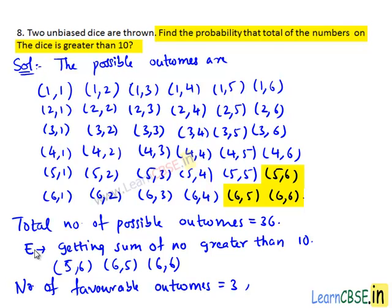Then we have number of favorable outcomes equals to 3, which are (5,6), (6,5) and (6,6). Then probability of event E, P(E), equals to number of favorable outcomes that is 3 divided by total number of possible outcomes which is 36. Here 3 is a common factor of both 3 and 36. 3 goes in 3 one time and 3 goes in 36 twelve times. Therefore, the probability that total of the numbers on the dice is greater than 10 is 1 divided by 12.